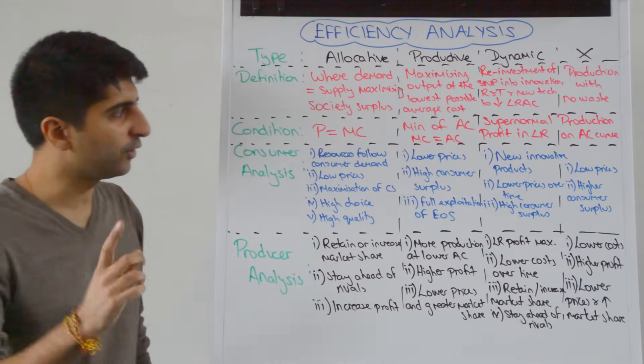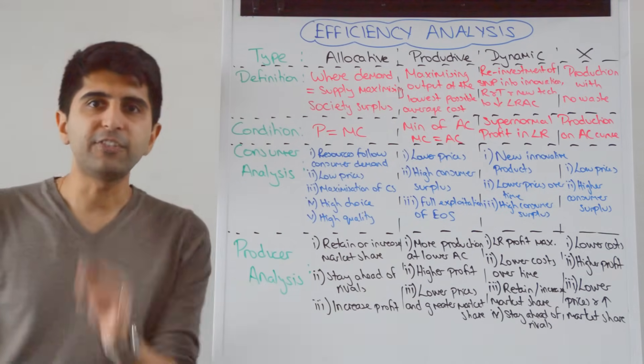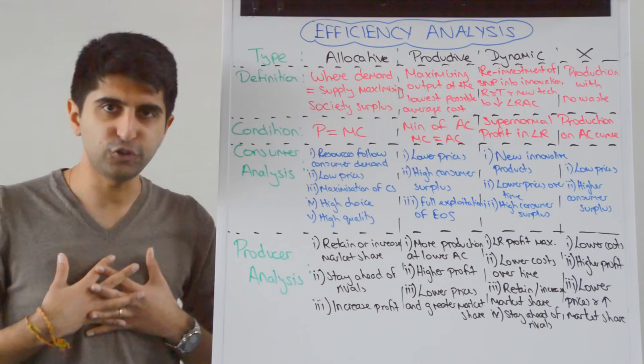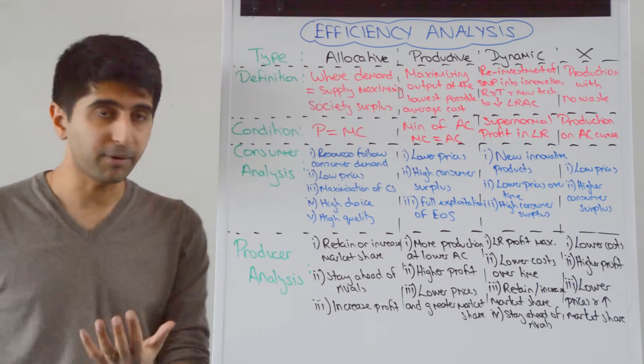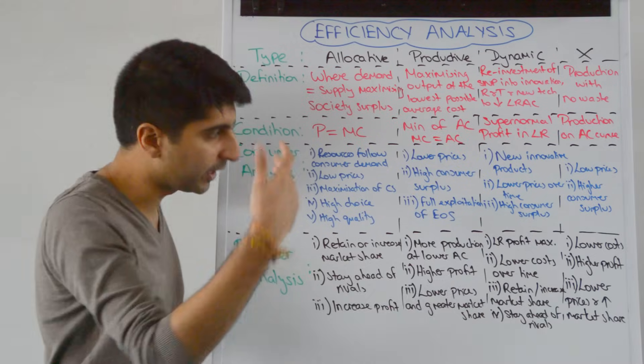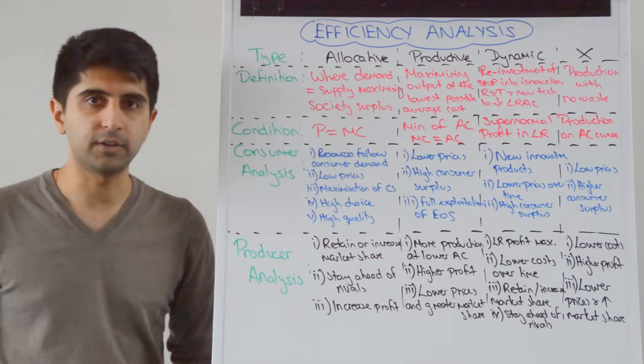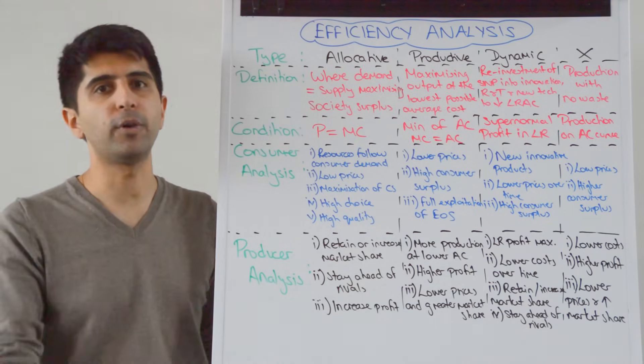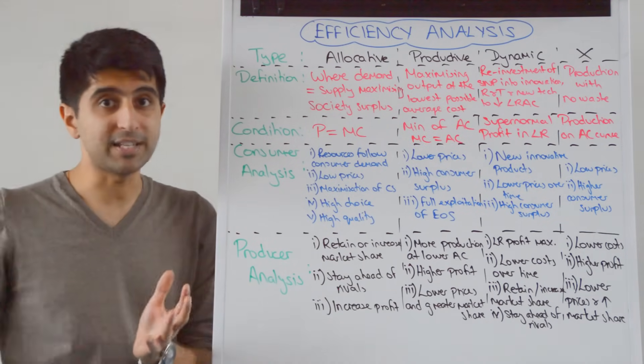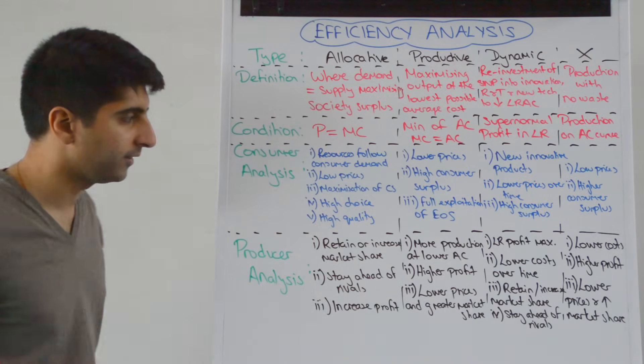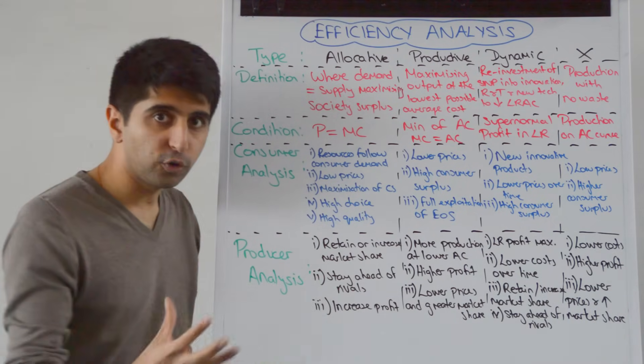So why is productive efficiency good for a consumer? If the lower average costs are passed on to consumers, consumers may get lower prices, which is great. That means higher consumer surplus. And that comes because of the full exploitation of economies of scale and firms operating at the minimum point on their average cost. That could be great if transferred to consumers via lower prices.